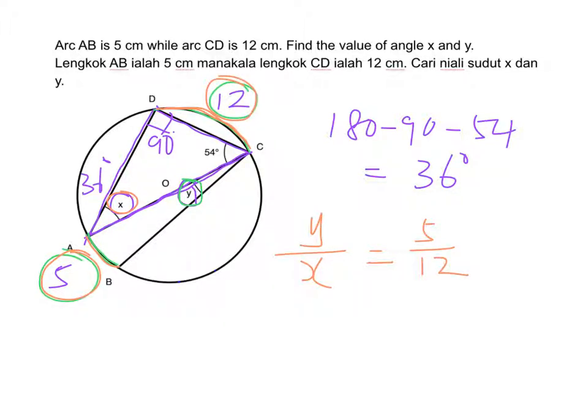We already found that X is 36 degrees, so we put in 36 here. Then we can find Y. So Y is 5 over 12 times 36, and we get 15 degrees.